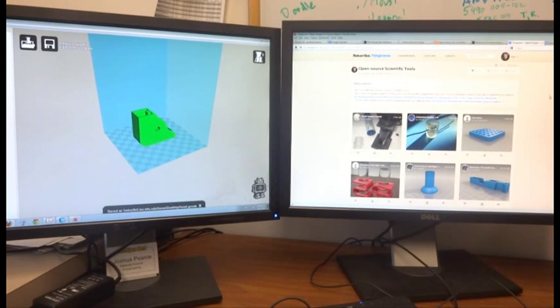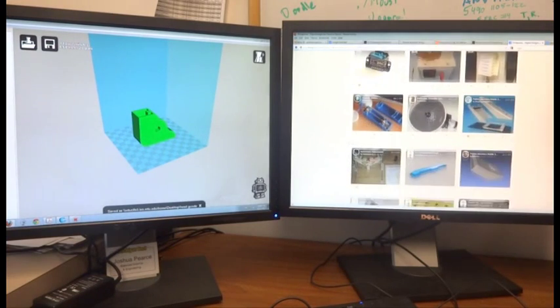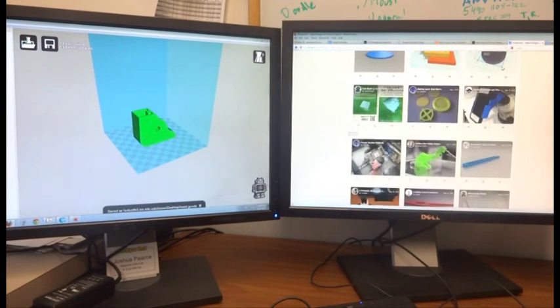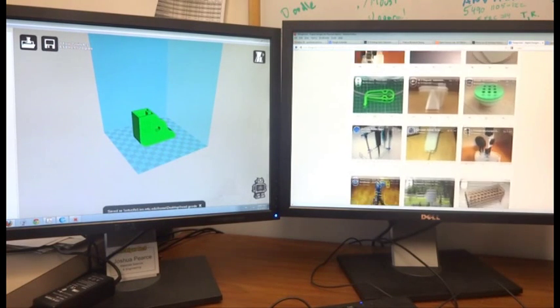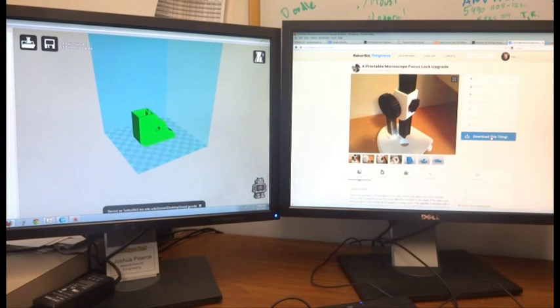Let's quickly go through the software tool chain for using open source scientific hardware. You would go to a site over here on the right, like Thingiverse, which I currently maintain an open source scientific tool collection. There's hundreds and hundreds of scientific tools that have already been designed and you can simply either search by keyword or browse through things that you might be interested in. For example, if you're interested in printing out a completely printable optical microscope, you could do this. Over here on the left, you can see one of these pieces that you can easily download.